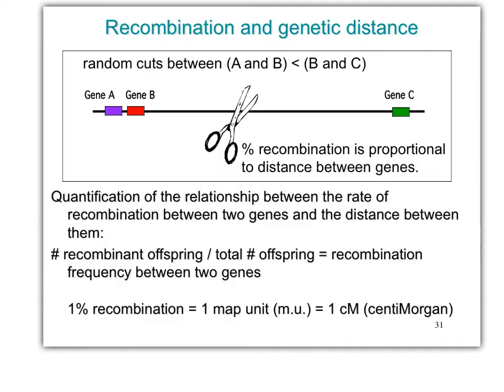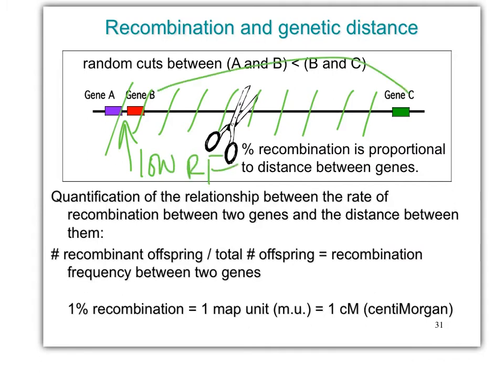This is just another way to think about it: if you're randomly cutting somewhere all along a chromosome, and let's say we cut 10 times, lots more of the cuts are going to be between B and C than between A and B. A and B are going to have a very low recombination frequency; B and C are going to have a high recombination frequency.